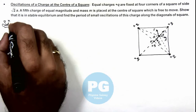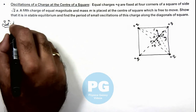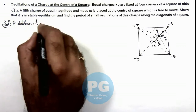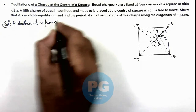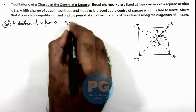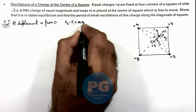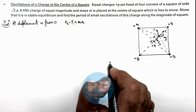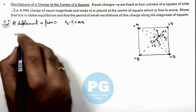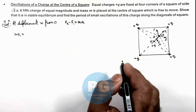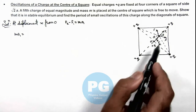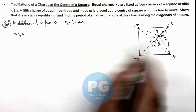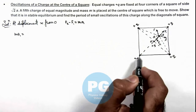Let's write down the equation of motion. At displacement x from center O, we can write F2 minus F1 is equal to m times a1, where a1 is the acceleration of this particle as it comes back. So m a1 equals F2 minus F1. F2 is the resultant force of the two nearer charges, and F1 is the resultant force of the two farther charges.